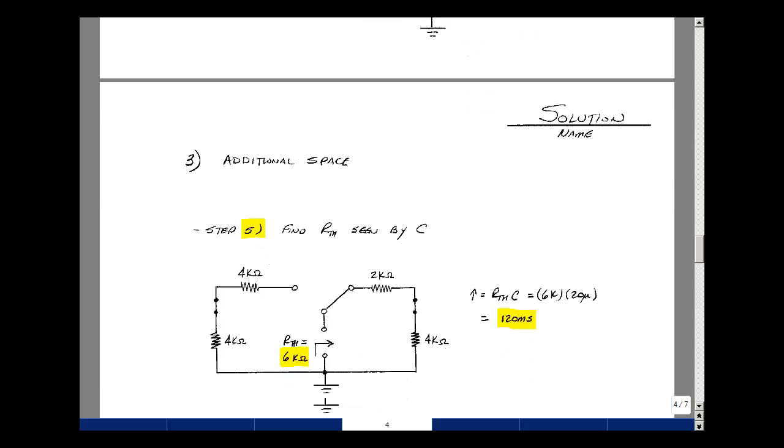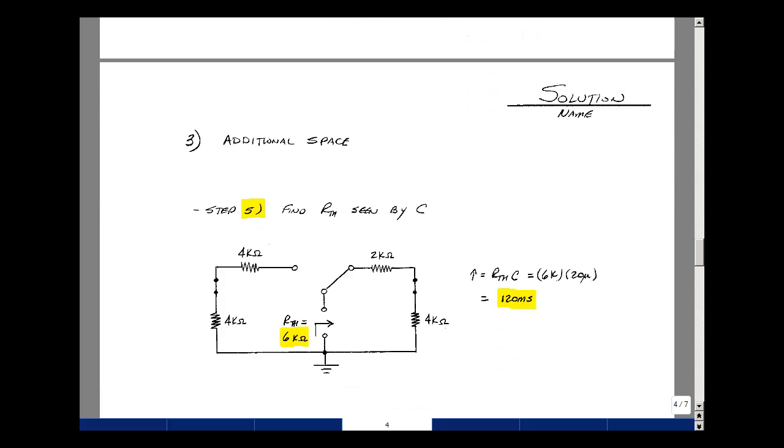Find the Thevenin resistance seen by the capacitor, and this would be for t greater than zero, so the switch is in this position. I set all the independent sources equal to zero, really disconnected from this part of the circuit, but I do have a voltage source here. So what I see looking back is just 2k in series with 4k, or 6k. So times the 20 microfarads is 120 milliseconds.